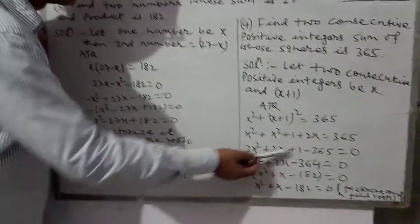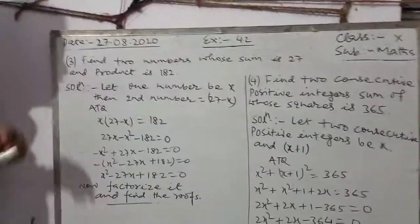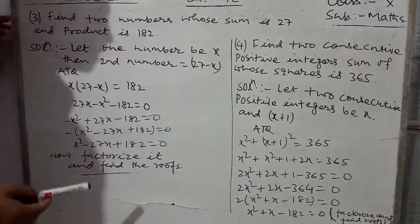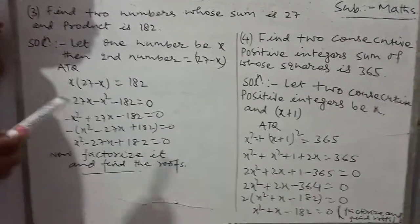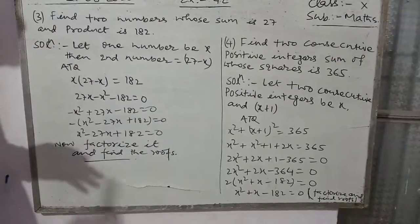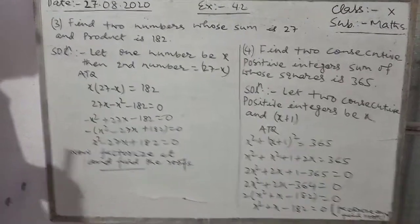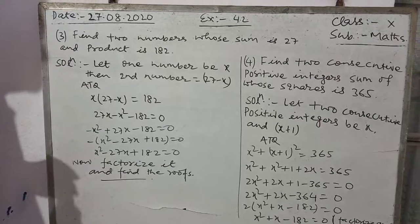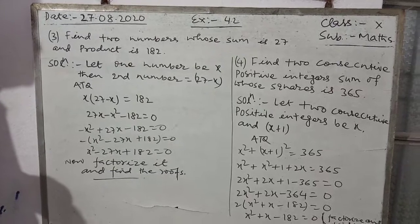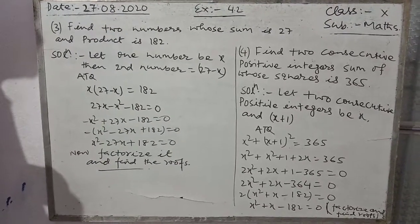Both terms are added and simplified to form a quadratic equation: x squared plus x minus 182 equals zero. Students, we will factorize this — split the middle term into two parts, get two factors, set each equal to zero, and find x. The values of x will be the roots of the quadratic equation. Okay, thanks.